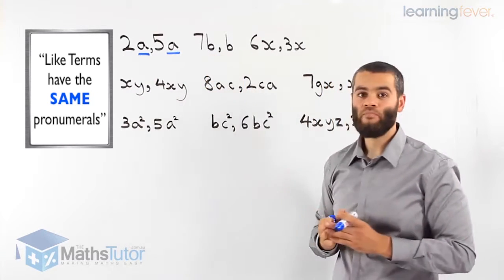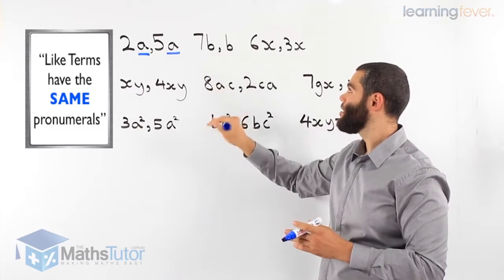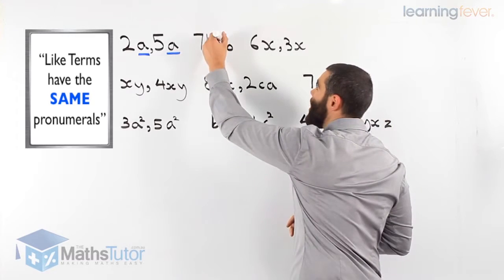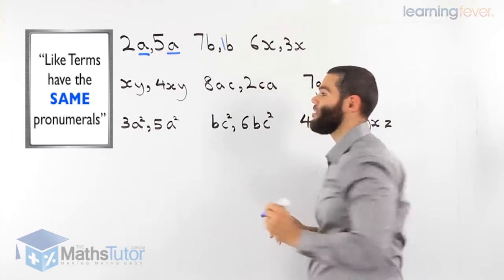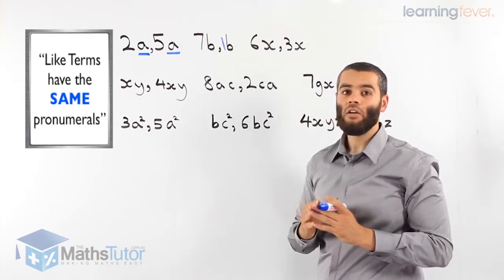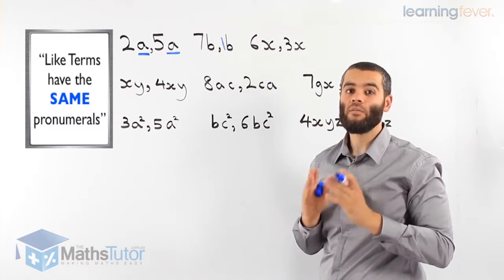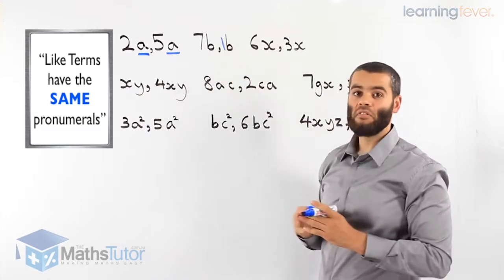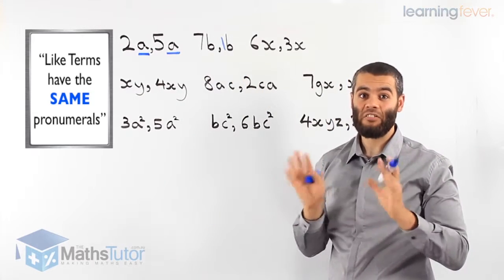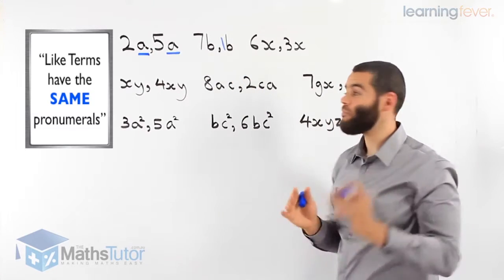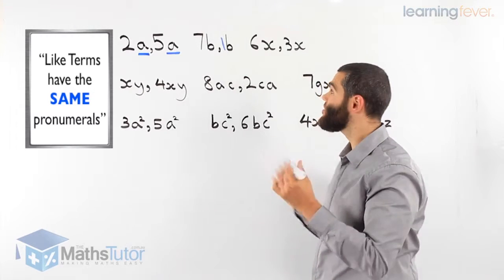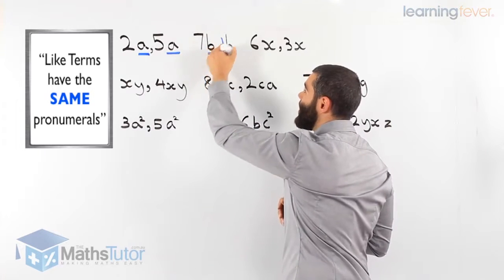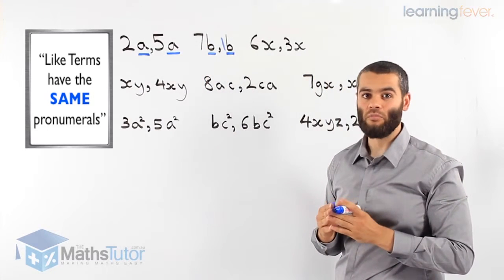Are these like terms? We have 7b and we have b. Now b really means there's a 1 here — one b. So when you see a b, it's not just a b, it's actually 1b. Do they have the same pronumeral? Yes, they have a b and a b. Therefore, 7b and b are like terms.